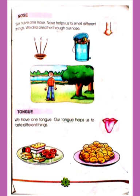After nose, we will move to tongue. We have one tongue. Our tongue helps us to taste different things. You can see in the picture. We taste with our tongue. We taste different food with our tongue.